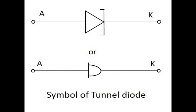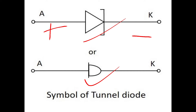This is the symbolic representation of the tunnel diode. You can represent the tunnel diode by either of the two symbols shown. The positive terminal is the P side, which is the anode, and the negative terminal is the cathode, which is the N side. You can connect in this manner if you want to operate the diode in either forward biasing or reverse biasing.